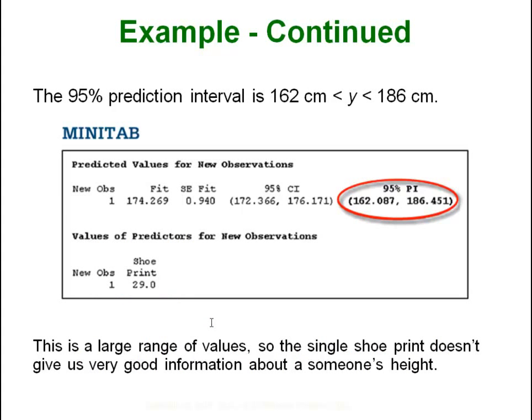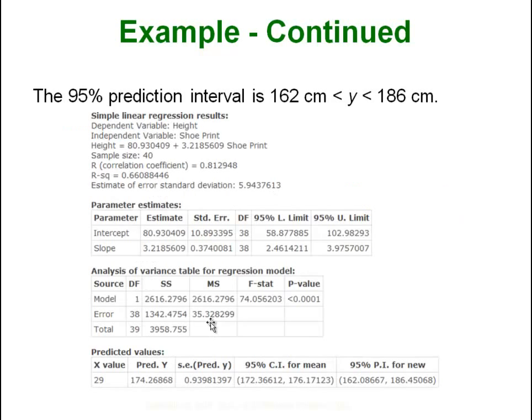If we used Minitab we would get this result, and if we use StatCrunch of course we get the same result—you just have to know where to find it. The 95% prediction interval for new just means for the predicted y. Here's our predicted y. Here is the equation, our correlation coefficient, our r-squared, all the same stuff that we saw from before. And then in addition, all I did was ask it to also predict and give me a 95% confidence interval for this predicted y, and this is what we get.